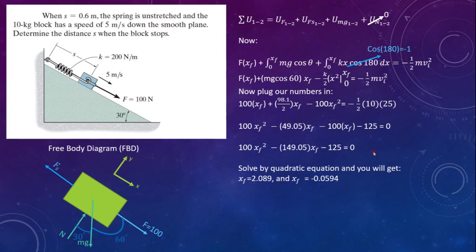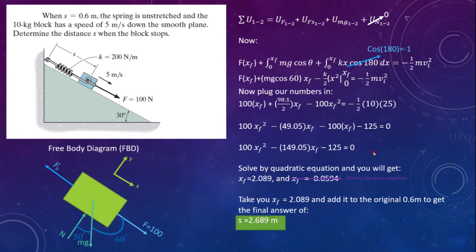We'll use the quadratic equation, and you'll get xf will equal 2.089, and xf will also equal negative 0.0594. We dismiss the negative one because you're not going to have a negative distance. And so finally, we take our final answer, we add it to the original 0.6, and we get the final answer of s equals 2.689 meters.